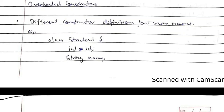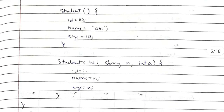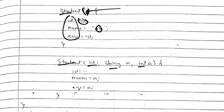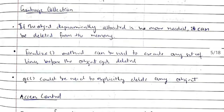An overloaded constructor means constructors with the same name but different parameters. For example, in a class Student, there can be two constructors of the same name: one with no parameters, which sets id, name, and age to default values like 10, 'abc', and 10, and one with parameters i, n, and a, where whatever is passed in the argument gets assigned to the variables.